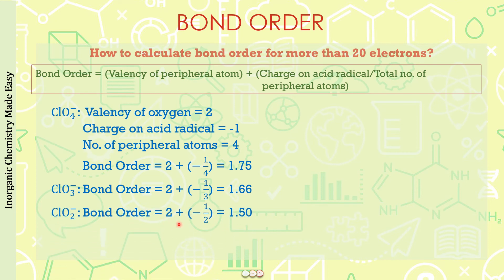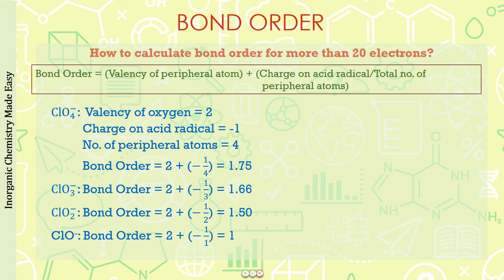For ClO₂⁻: bond order = (2 + (−1)) / 2 = 1.50. For ClO⁻: bond order = (2 + (−1)) / 1 = 1. So within half a minute, we have found the bond order for all four ions using a very short trick.